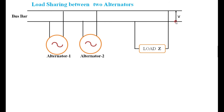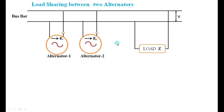The voltage across the bus bar is V — the terminal voltage across the load is V, and the terminal voltage of generator 1 and generator 2 is also V. Each alternator is represented by a source of voltage with its impedance in the form of R_A and X_S. Therefore I am representing these as Z1 and Z2, where Z1 is the synchronous impedance of alternator 1 and Z2 is the synchronous impedance of alternator 2.